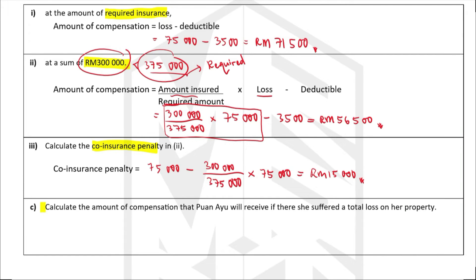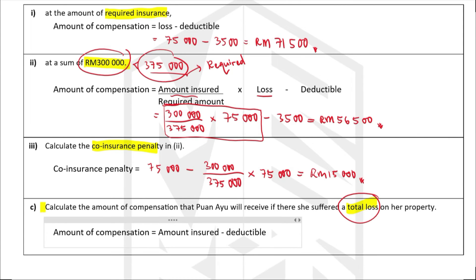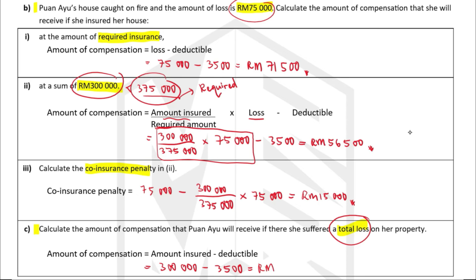In scenario three, Puan Ayu suffers a total loss on her property. For a total loss, the compensation is simply the amount insured minus the deductible: 300,000 minus 3,500 ringgit, which equals 296,500 ringgit — assuming she insured the house for 300,000 ringgit.